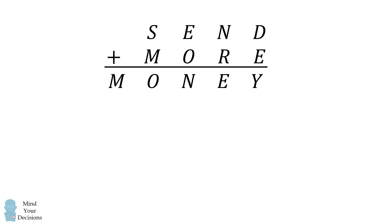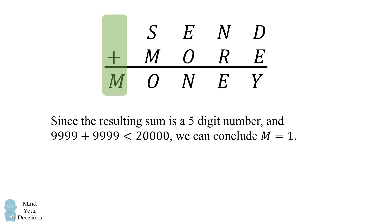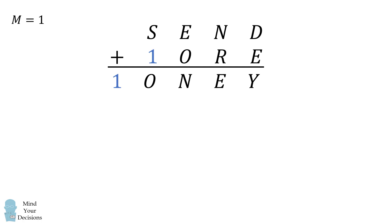So how can we solve this? We'll start with the fifth column. Since the resulting sum is a five digit number, and the largest sum we can produce is 9999 plus 9999, which is less than 20,000, we can conclude M is equal to 1. So we already have one of the digits which takes two spots in this summation.